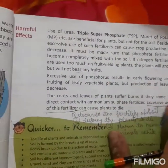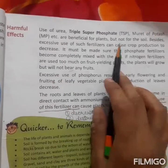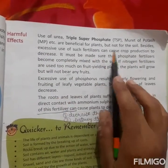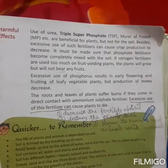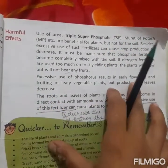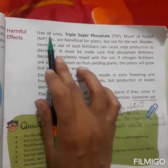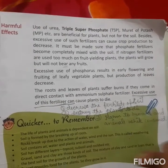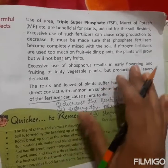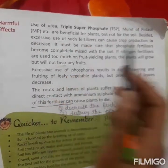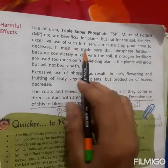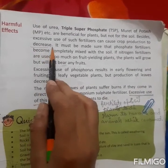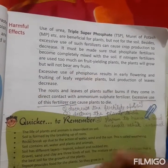Now we will talk about the harmful effects of fertilizer. Use of urea, TSP, and MP are beneficial for plants but not for the soil. Chemical fertilizers can help plants grow and resist disease, but they are not useful for the soil. If we use excessive amounts of such fertilizer, crop production will decrease.